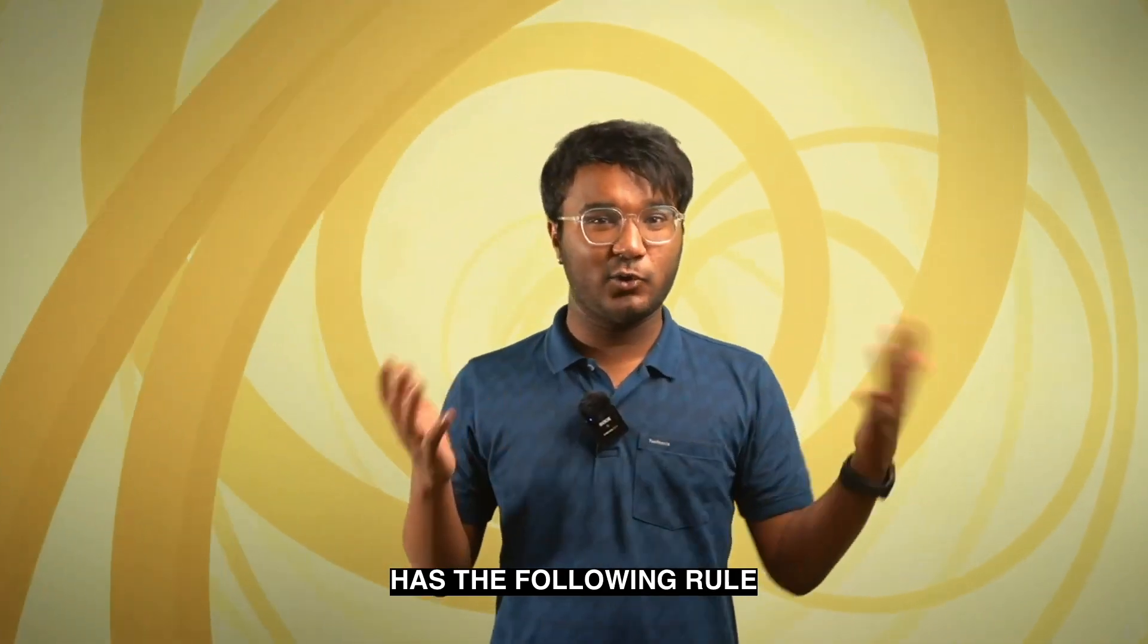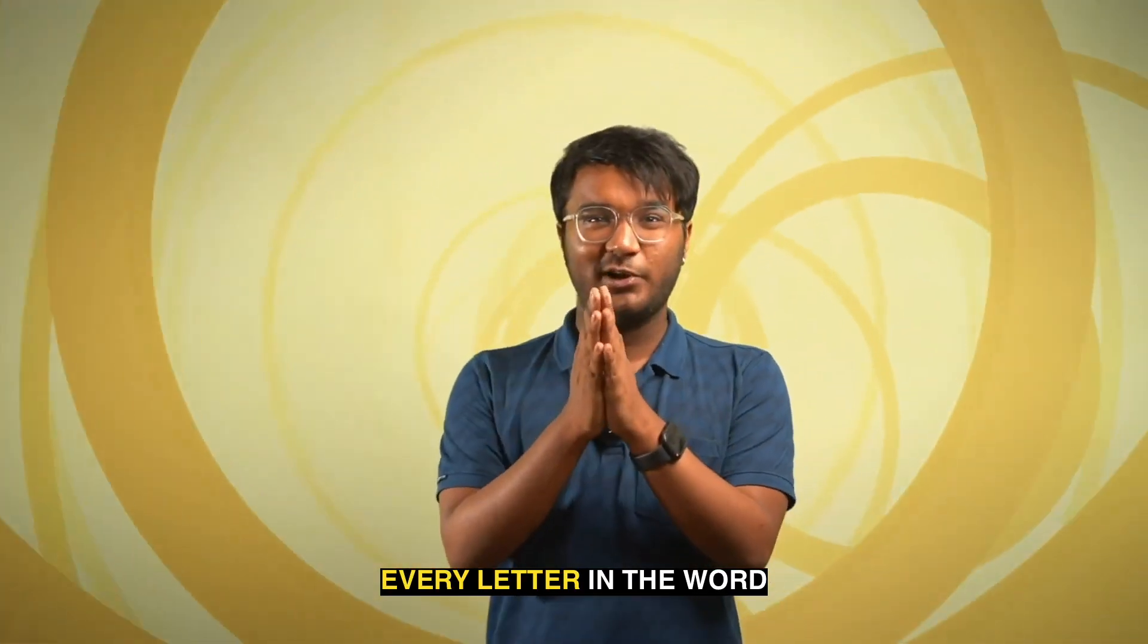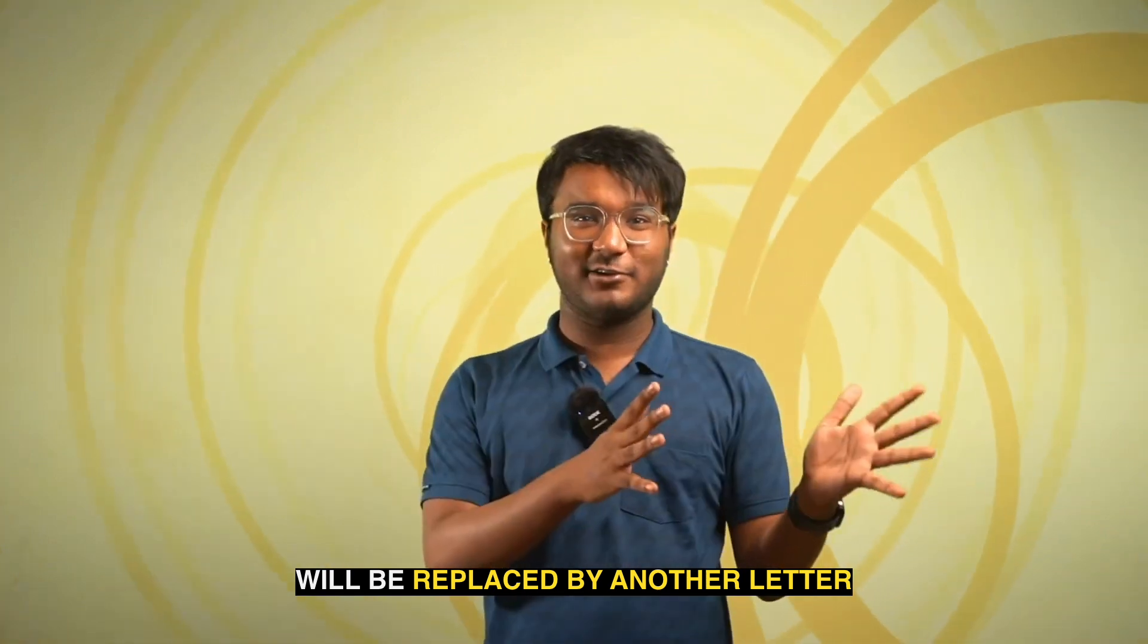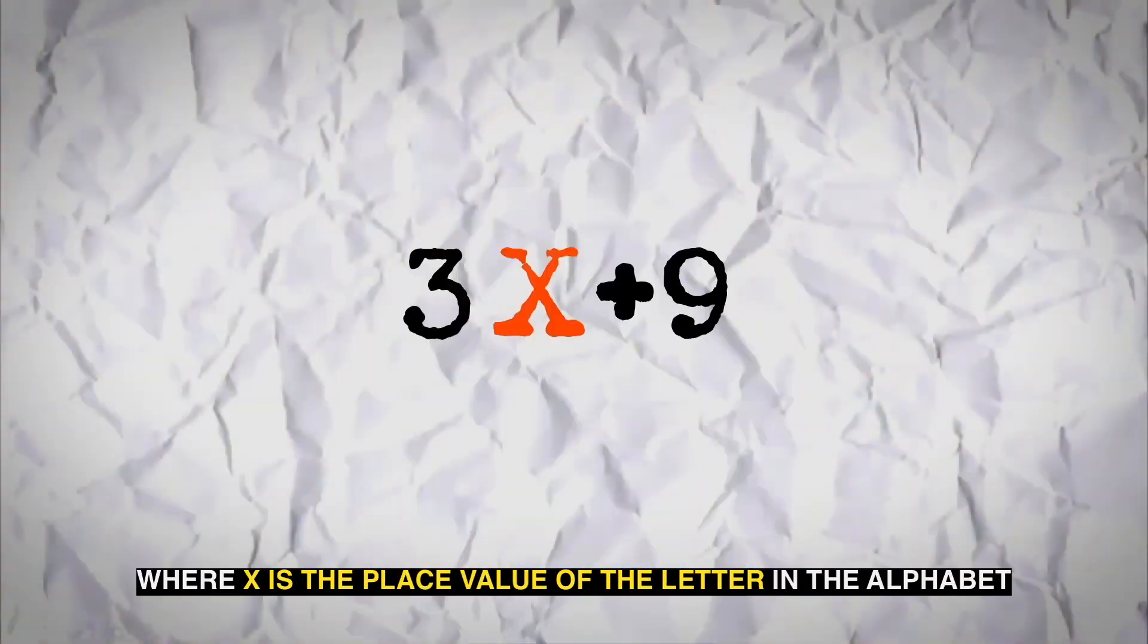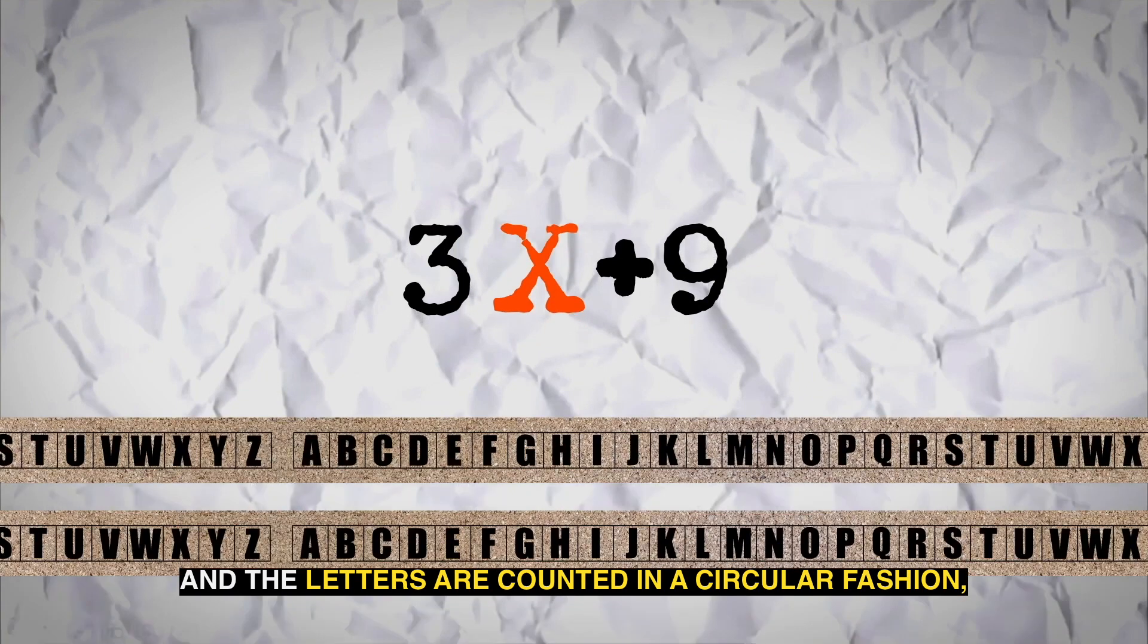Let's suppose the algorithm has the following rule. Every letter in the word will be replaced by another letter equivalent to the value of 3x plus 9, where x is the place value of the letter in the alphabet and the letters are counted in a circular fashion.